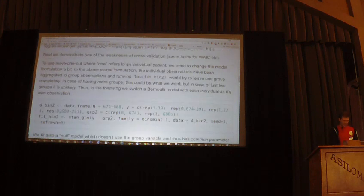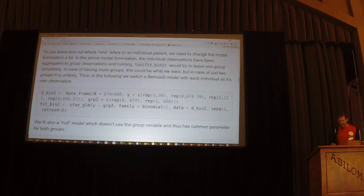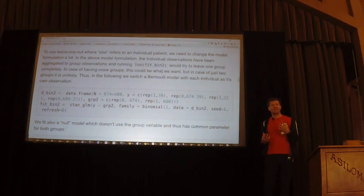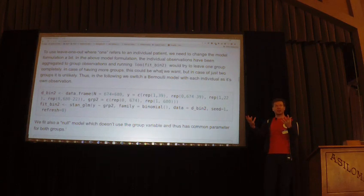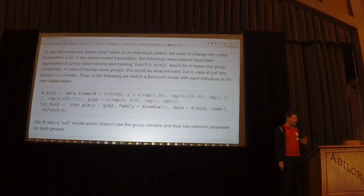If we trust the model, we don't need cross-validation — we can just look at the posterior distribution and make inference. But let's see what happens if we still use cross-validation, to show its weakness. The previous model in rstanarm had only two observations because we aggregated data from each group. It doesn't make sense to do leave-one-out by leaving one group out and trying inference with only the control or only the treatment.